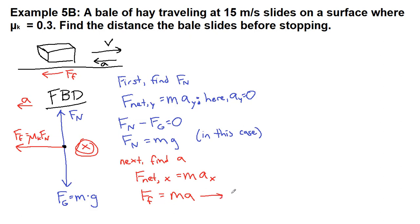When we plug in that friction is mu k times the normal force, which in this case is mg, we see that just like the previous problem, because there is no push or pull, the mass will be able to cancel out here.